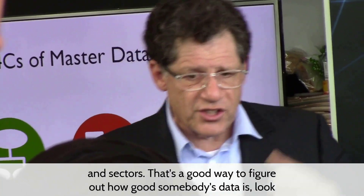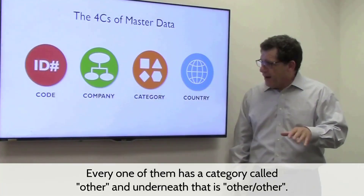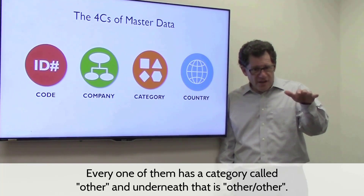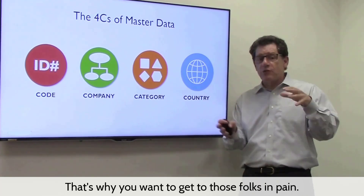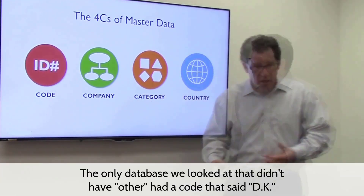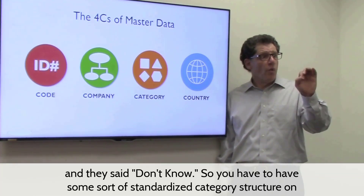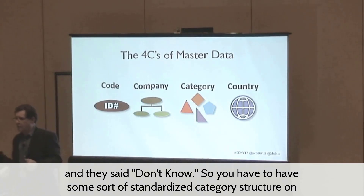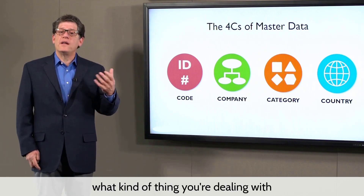Category has all sorts of granularity. You've got trade channels and sectors. And that's a good way to figure out how good somebody's data is — look at what categories they have. Every one of them has a category called 'other,' and underneath that is 'other other.' They'll be embarrassed about it, and you'll have people defend it. A salesperson puts 'miscellaneous' on there. The only database we looked at that didn't have 'other' had a code that said 'DK,' and we asked them what that meant and they said 'don't know.' So you have to have some sort of standardized category structure, some kind of common taxonomy to understand what kind of thing you're dealing with.